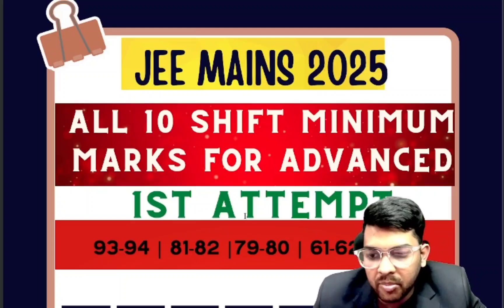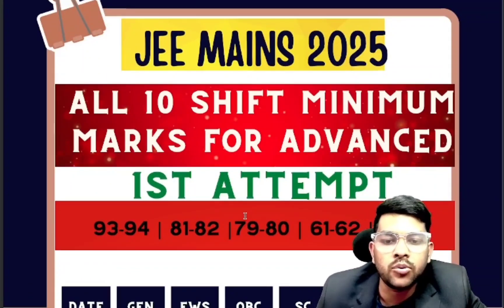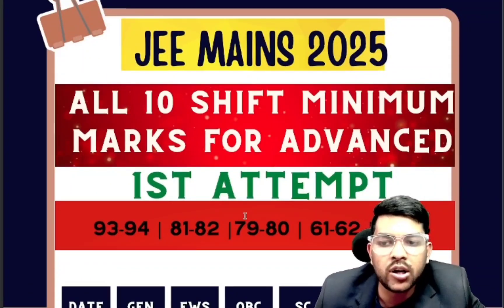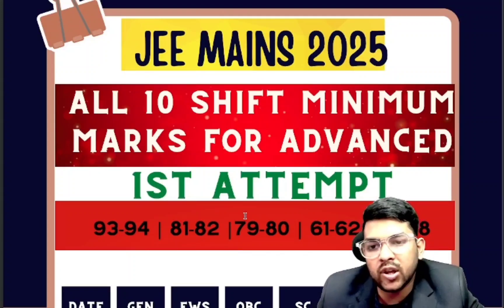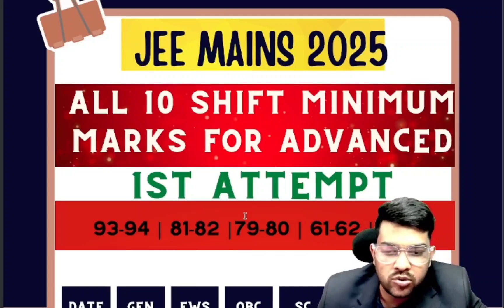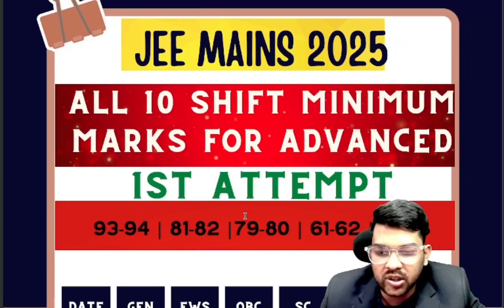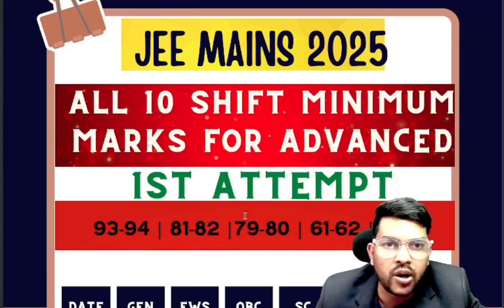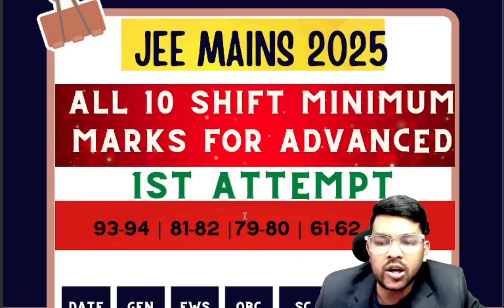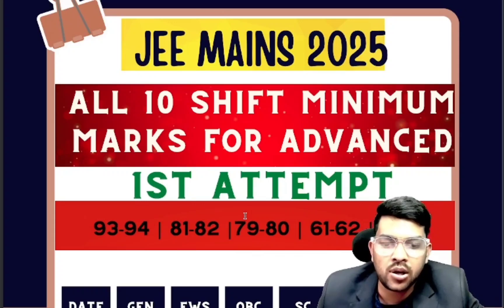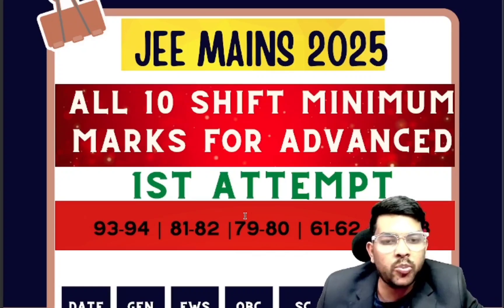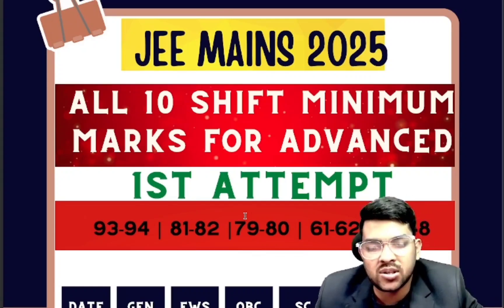The percentile depends on the total number of unique aspirants, because a total of 2.5 lakh aspirants will be taken for the Advanced examination. If the number of aspirants is more, you have to score a higher percentile. As per the current year trend, 93 to 94 percentile will be the cutoff for General, 81 to 82 for EWS, 79 to 80 for OBC, 61 to 62 for SC category, 47 to 48 for ST category, and for PWD 0.0011 percentile — meaning you just need to appear at the center.